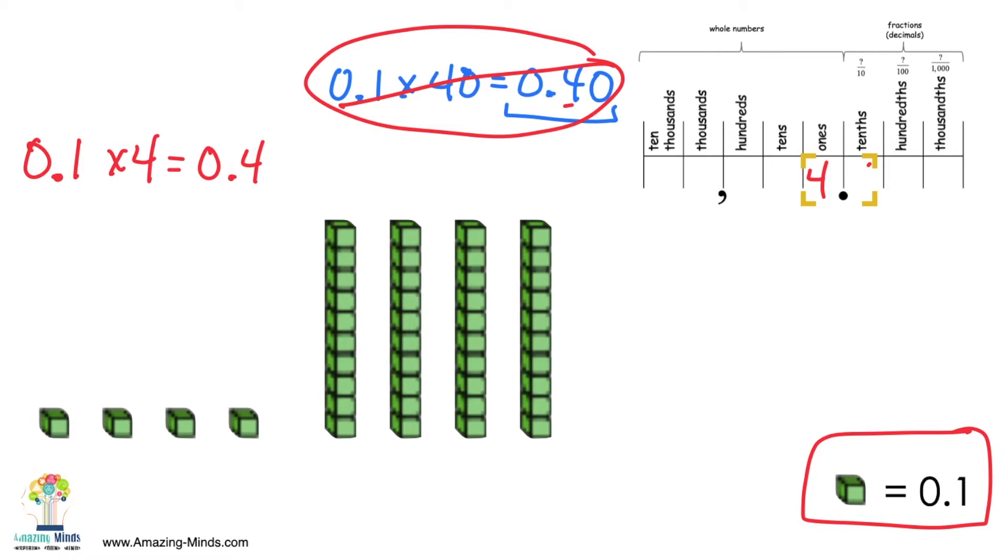If we said 1 tenth times 4 tenths equals 4 tenths. Well, we know we're going to have 4 of something. What are we going to have 4 of?